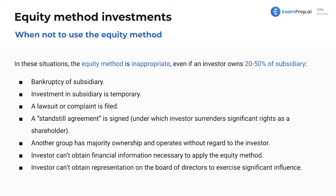When not to use the equity method — generally in order of importance for the exam. Even if you own 20% to 50% of the subsidiary, you cannot use the equity method in these situations: if the subsidiary is in bankruptcy; if the investment in subsidiary is temporary, like buying 30% of stock and trading it within 30 days as a trading security; a significant lawsuit or complaint; and a few others. Bankruptcy is the biggest one. Also, if you can't exercise significant influence, you use the cost method — which is just the fair value method — but you own 20% to 50%.